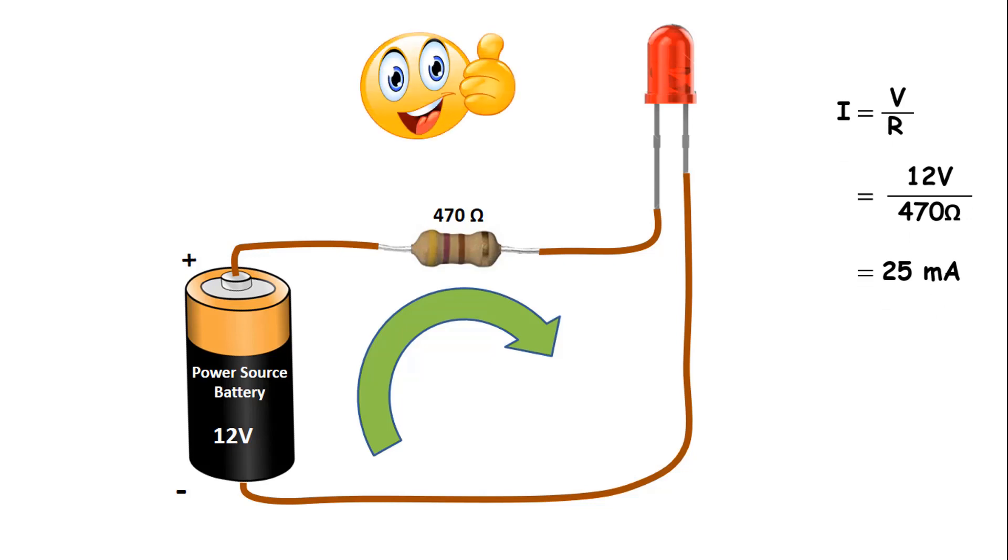Thus, since a current of approximately 25 mA will flow through the circuit, LED gives light for a long time without any damage.